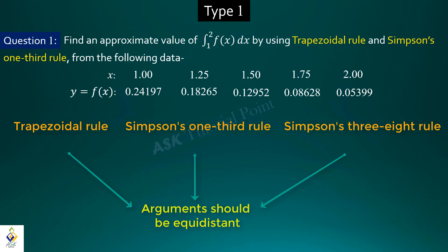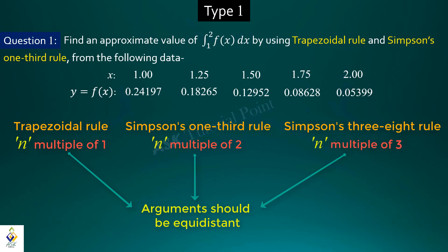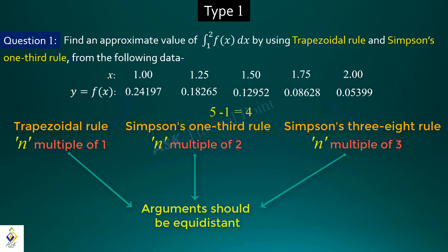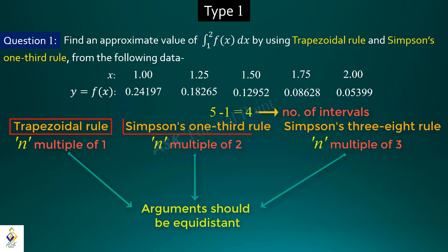The trapezoidal rule applies when the number of intervals is a multiple of 1. The Simpson's one-third rule applies when the number of intervals is a multiple of 2 (even number). And the Simpson's three-eighth rule applies when the number of intervals is a multiple of 3. For example, if there are 5 ordinates, then the number of intervals is 5 minus 1 equals 4. Since 4 is a multiple of 2, we apply the trapezoidal rule and Simpson's one-third rule. If 4 were a multiple of 3, we would apply the Simpson's three-eighth rule.